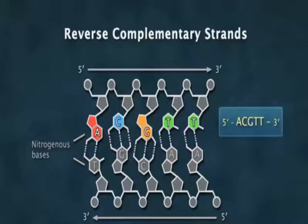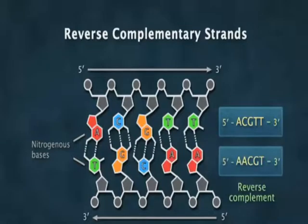Now a beautiful feature of knowing these hydrogen bonding pairing rules is that if you know the sequence on one strand of DNA, you automatically know the sequence on the other strand of DNA. So if this reads ACGTT across five prime to three prime, on the other strand going the other direction, it's going to read AACGT.